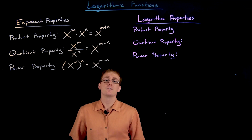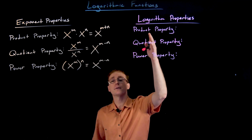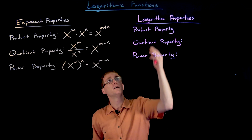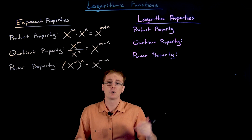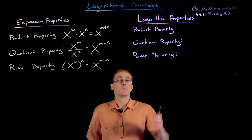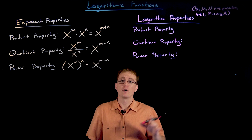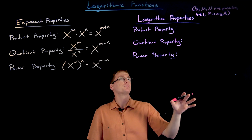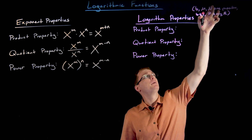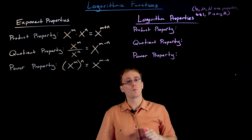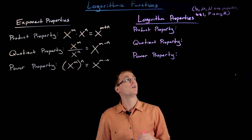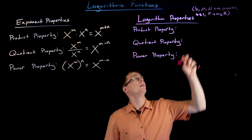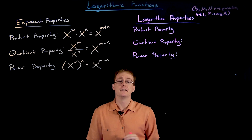Now let's write down the corresponding logarithmic properties. These properties share the same names — we just say the logarithmic product property or the product property for logarithms to differentiate. When we write these logarithmic properties down, we'll have quantities b, M, N, and p involved. We'll assume that b, M, and N are positive real numbers with b not equal to one — that's our base — and p can be any real number.